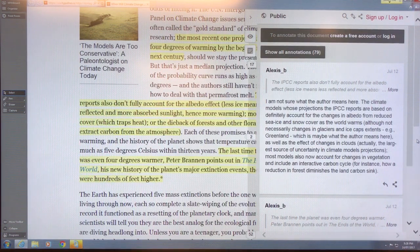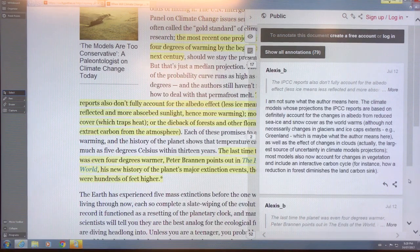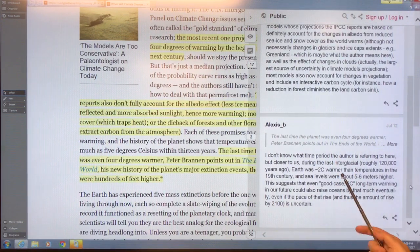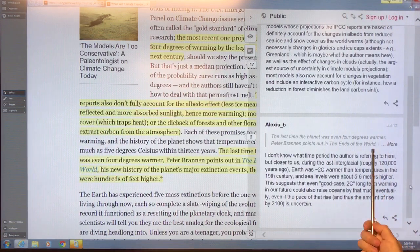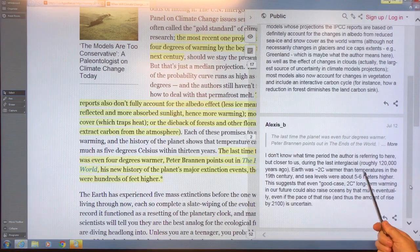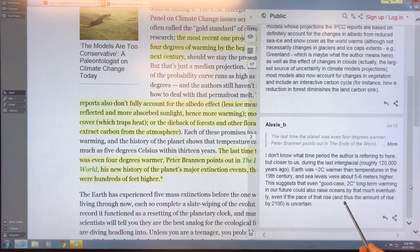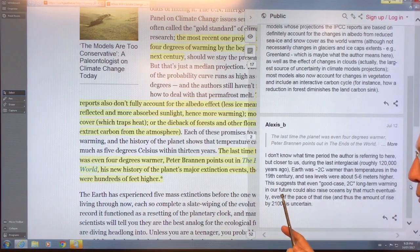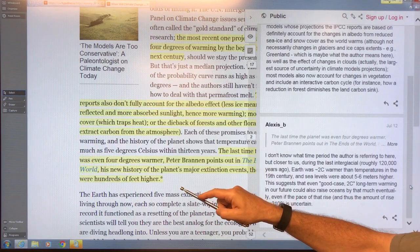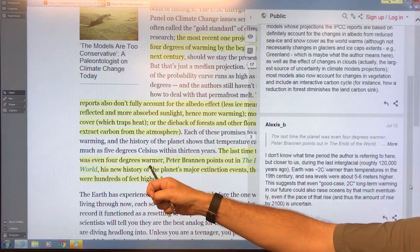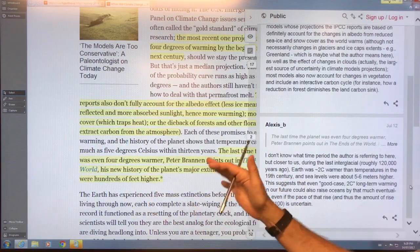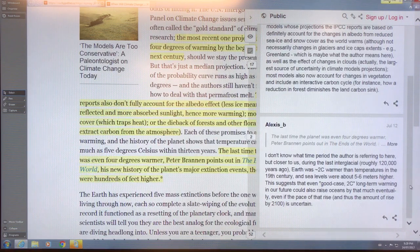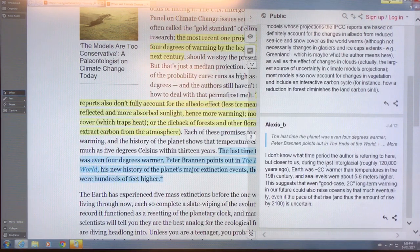I don't know what time period the author is referring to here when the last time the planet was four degrees warmer. But during the last interglacial, Earth was two degrees warmer, sea levels were five to six meters. When a comment is made, that's a valid point. When it says the last time the planet was four degrees warmer, you'd have to go to the references and look at the history. It should have added what time period, how many interglacials ago, because this guy says it was only two degrees warmer than the previous interglacial.